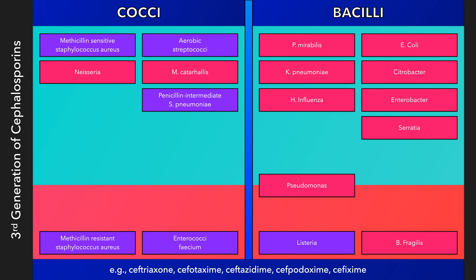Third generation cephalosporins are broad-spectrum antibiotics that can treat a wide variety of conditions such as respiratory tract infections, urinary tract infections, Lyme disease, meningitis, and gonorrhea. Although they are less effective against staphylococci, they provide better coverage against pneumococci, Neisseria species, Haemophilus influenzae, and the Enterobacteriaceae. Ceftriaxone is also usually active against Salmonella. This generation is more stable to the beta-lactamases produced by gram-negative bacilli and can often be effective against infections that are otherwise resistant to the first two generations of cephalosporins.